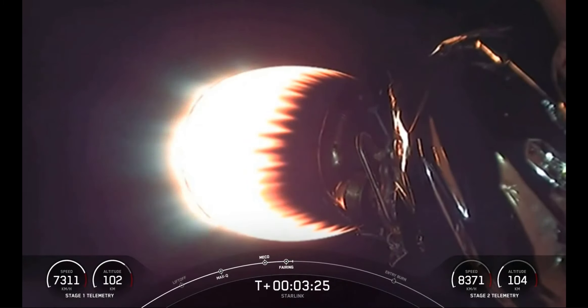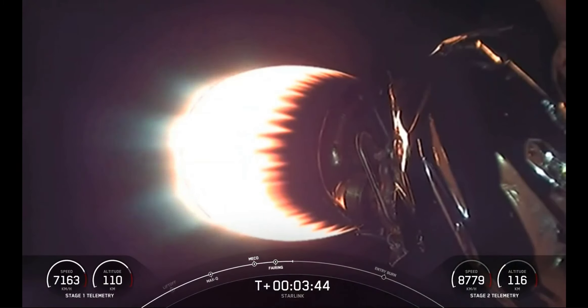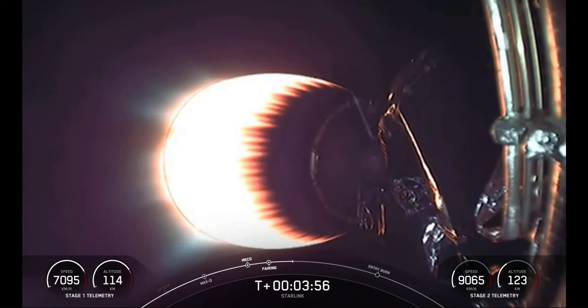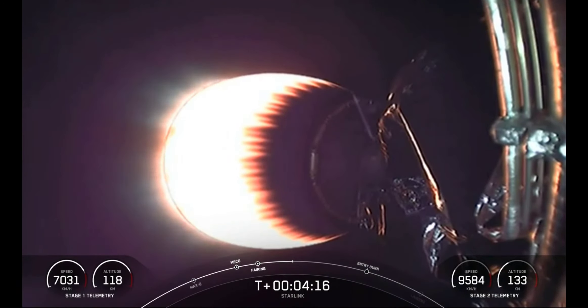As a reminder, we will be attempting to recover the fairing halves today with our recovery ships, GO Searcher and GO Navigator. Now, after that beautiful launch that we just could barely see, Stage 2 heads towards its targeted drop-off orbit. Stage 1 is going to execute two burns in order to make its way back to Earth. The first is the entry burn, where three of the M1D engines will reignite, and this will help slow the stage down as it re-enters the upper part of the Earth's atmosphere. The second burn is the landing burn. This is a single engine burn that will bring the vehicle speed down rapidly in order to land on our drone ship, Of Course I Still Love You.